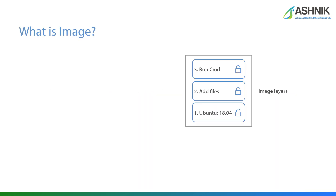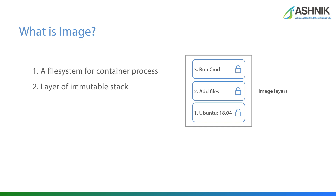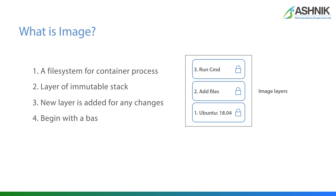What is an image? It's a file system for a container process and consists of layers of immutable stacks. New layers are added for any changes that we make. And oftentimes it begins with a base image, which we can get from multiple sources such as Docker Hub.